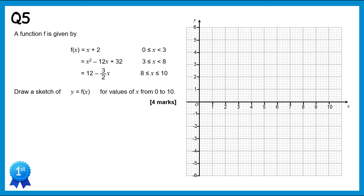This function starts with x plus 2 for x values from 0 to 3. It has an intercept at 2 and a gradient of 1, so the points are (1, 3), (2, 4), and (3, 5). This stops at x=3, so we've done that part of the function.